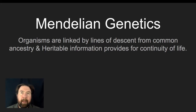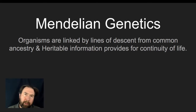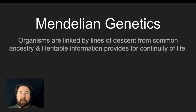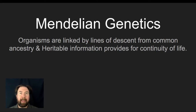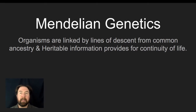Hi everybody, it's Mr. Matthew again, and in this video we're going to be talking about Mendelian genetics. We're actually going to start by taking a step back before we get into Mendelian genetics, and talk about how organisms are linked by lines of descent from common ancestry. We're going to talk about the common origin idea, and then get into how hereditary information is passed from one generation to the next — what we call the continuity of life.